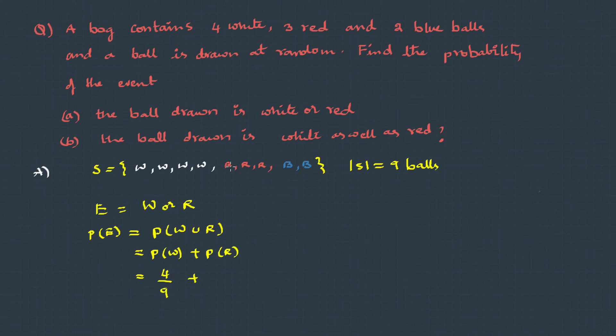And probability of red is 1, 2, 3 — 3 possibilities out of 9. So together it becomes 7 by 9.